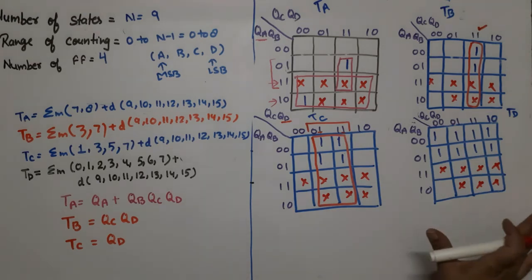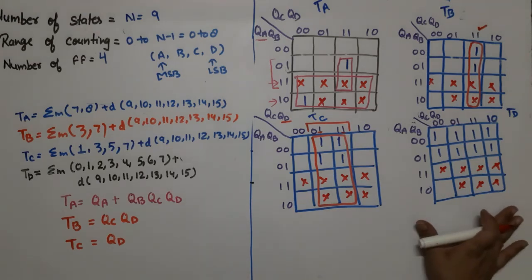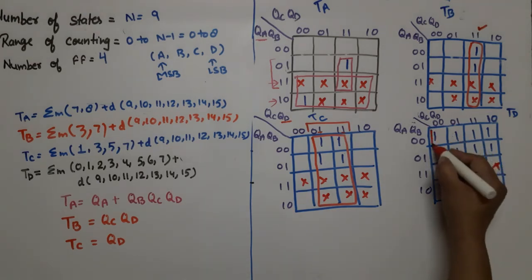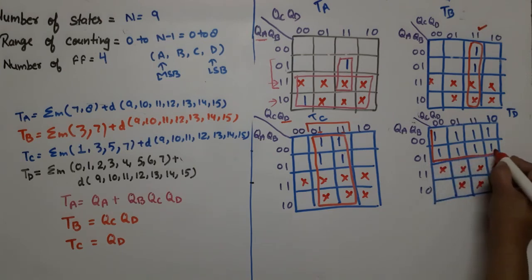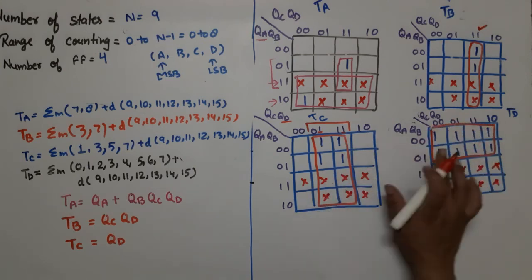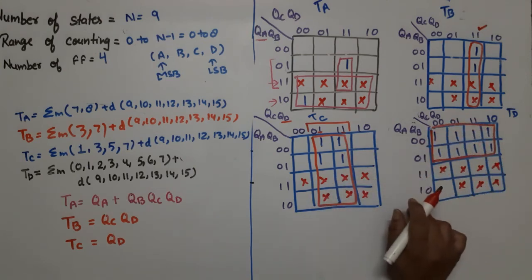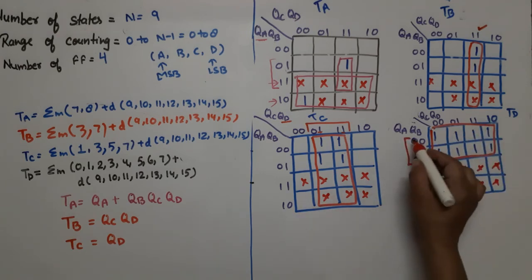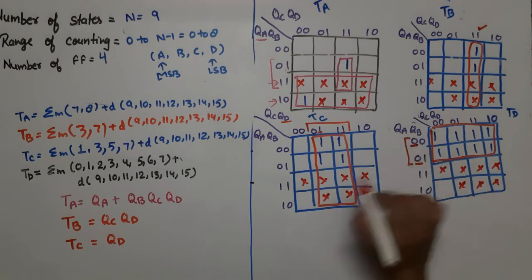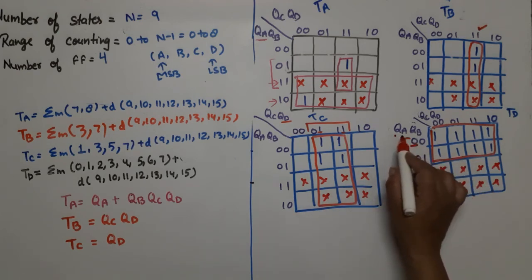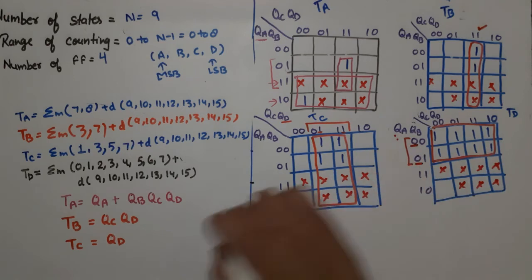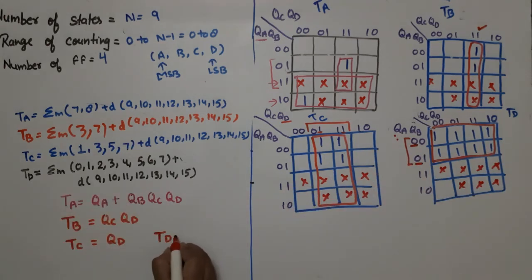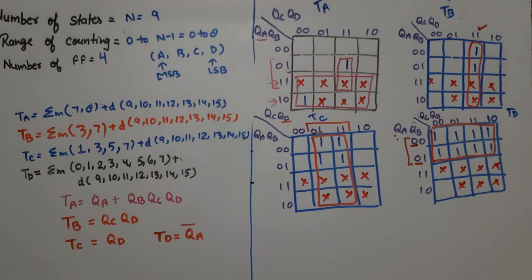For TD simplification: one large octet is formed using all columns and two rows. The common value corresponds to QA, and its value is 0 (complement), so TD = QA_bar.